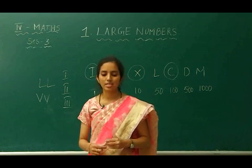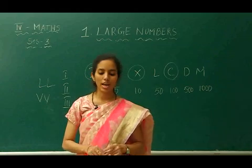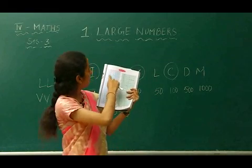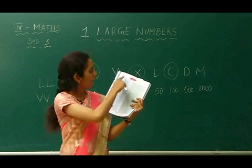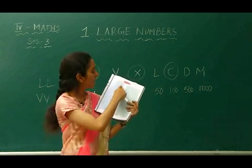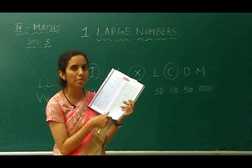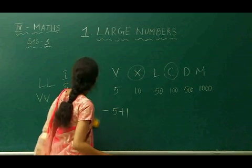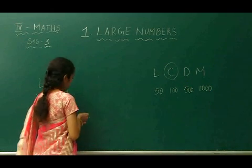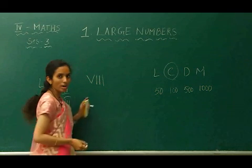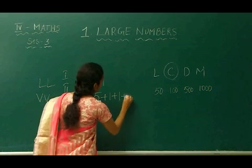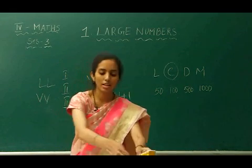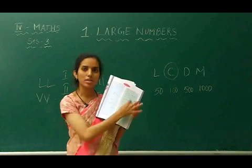Coming to exercise 1.6: fill the empty boxes in the two tables. The table has three columns — the first is Hindu-Arabic numbers (the regular numbers we use), the second is Roman numbers, and the third is what it exactly means — the expansion. For example, take 8. 8 in Roman numerals is VIII, which means 5 plus 1 plus 1 plus 1. This expansion is what you write in the third column.